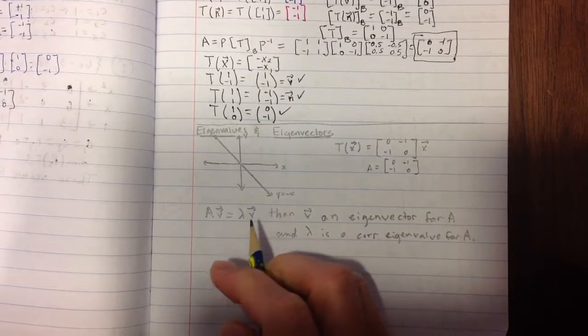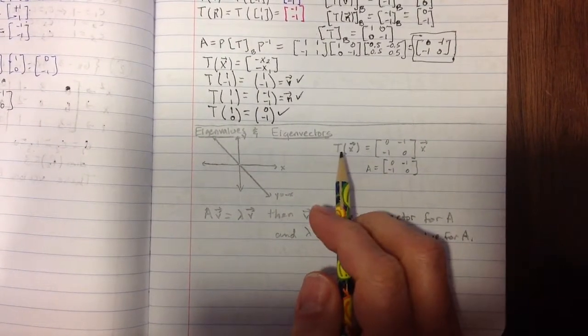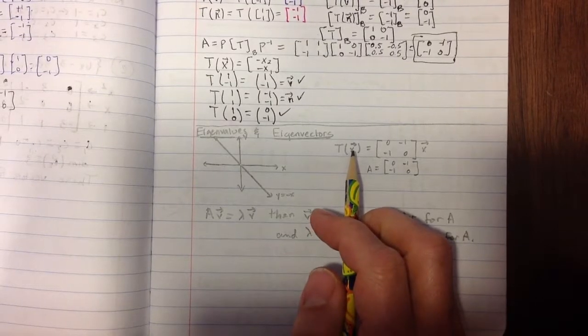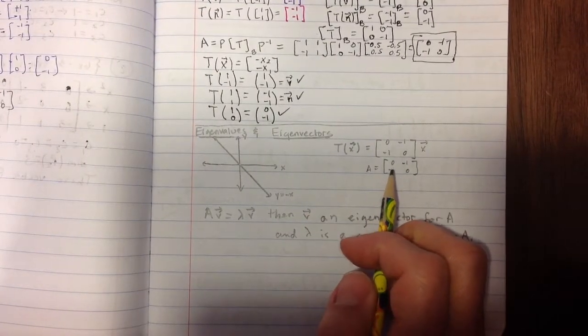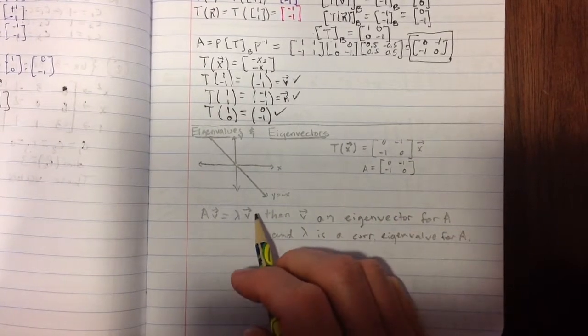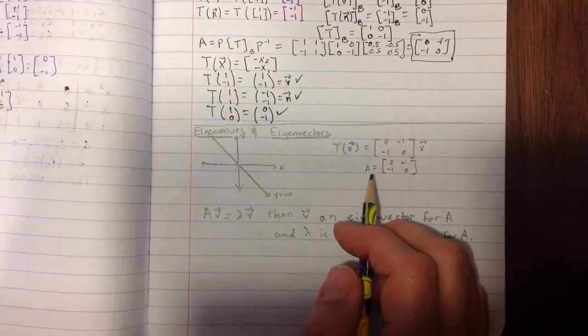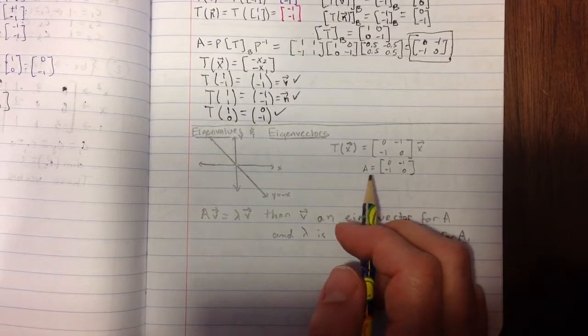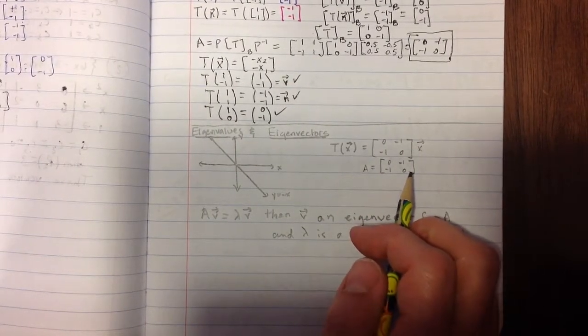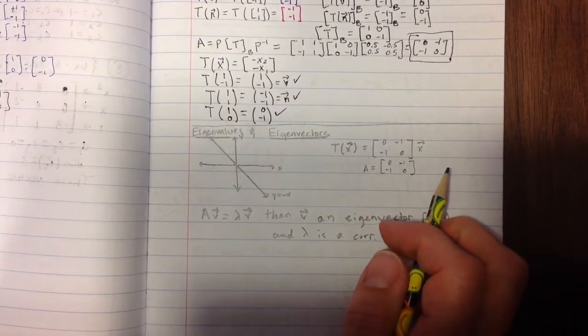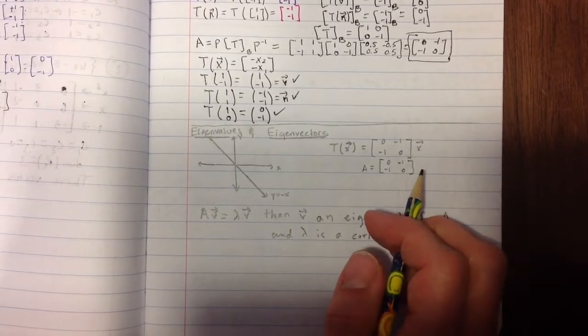So essentially, what it means, if you look at the transformation, is if I plug a vector into that transformation, multiply it by that matrix A, I should get a multiple of that vector back. Or, if I'm just looking at the eigenvalues and vectors of a matrix, what it says is if I multiply that matrix times a vector, I should just get a scalar multiple of it back. So it really scales these.